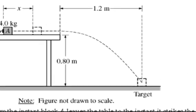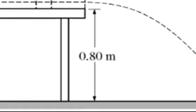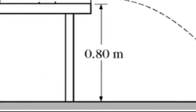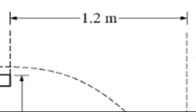We want to take a look at the second half of this problem, where object A, the block A, is going to be coming off the table. The things we want to zero in on is that the table is 0.8 meters high, and a target is 1.2 meters away from the table.